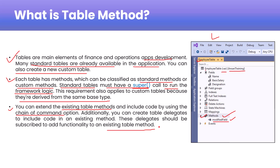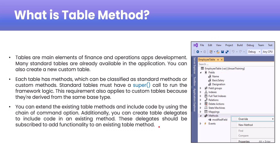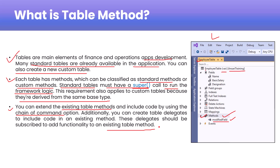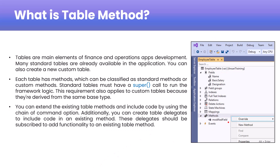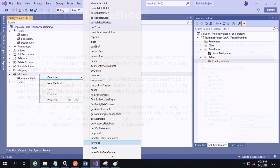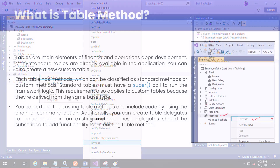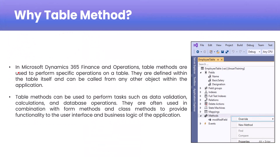Now let's see why table methods are important. Before that, if you want to know how to override a particular method, you can right-click on the method node and there will be an option to override. In Microsoft Dynamics 365 Finance and Operations, table methods are used to perform specific operations on a table.